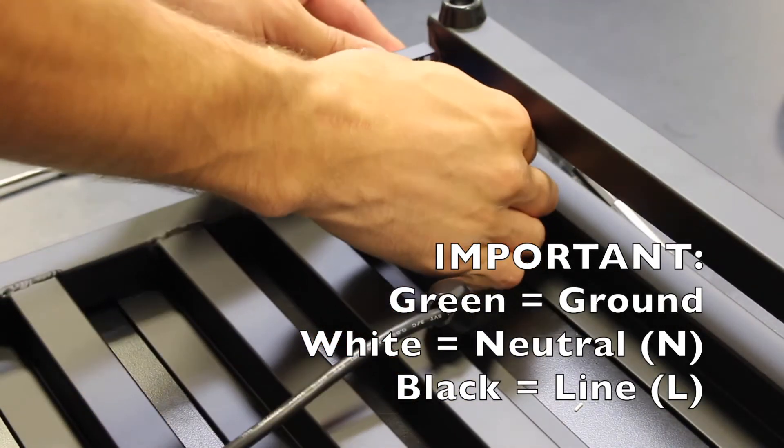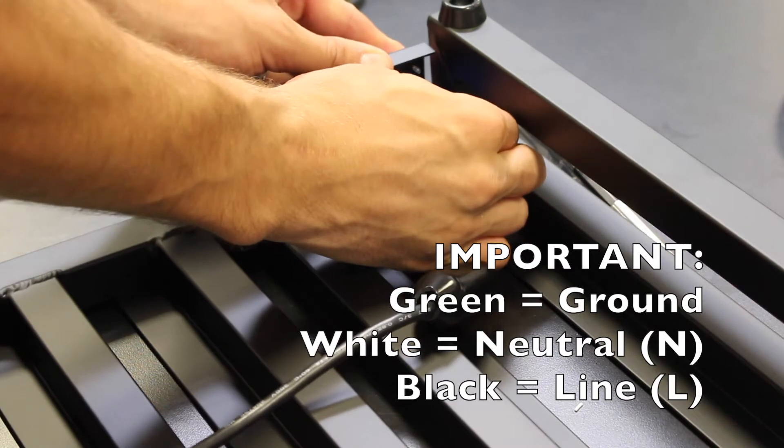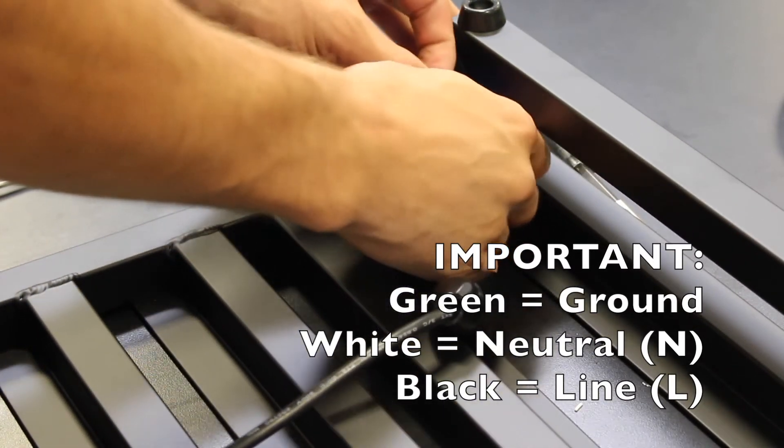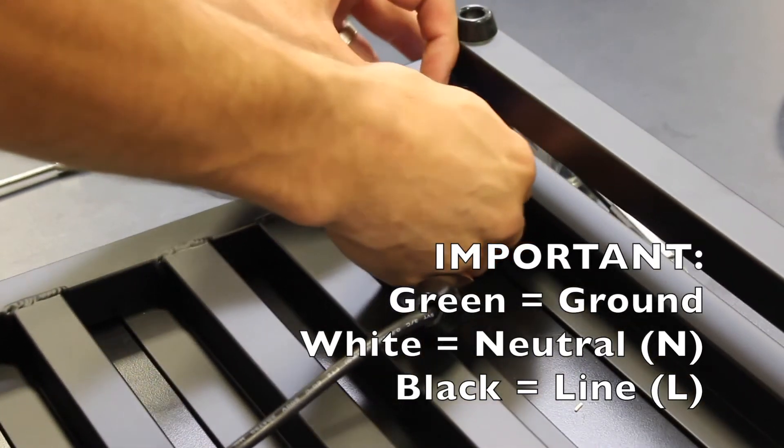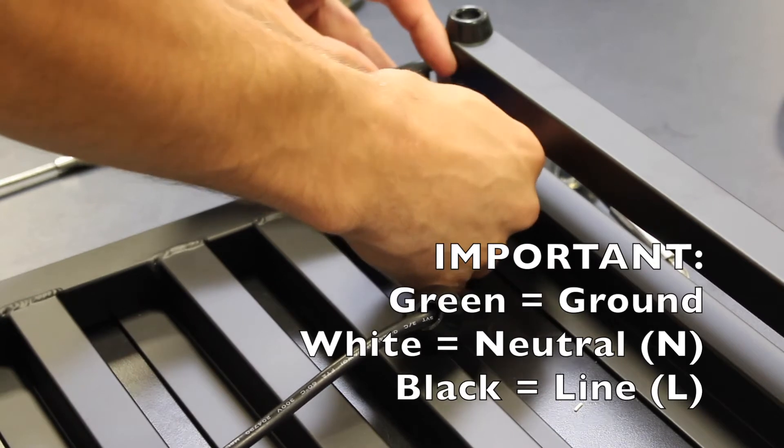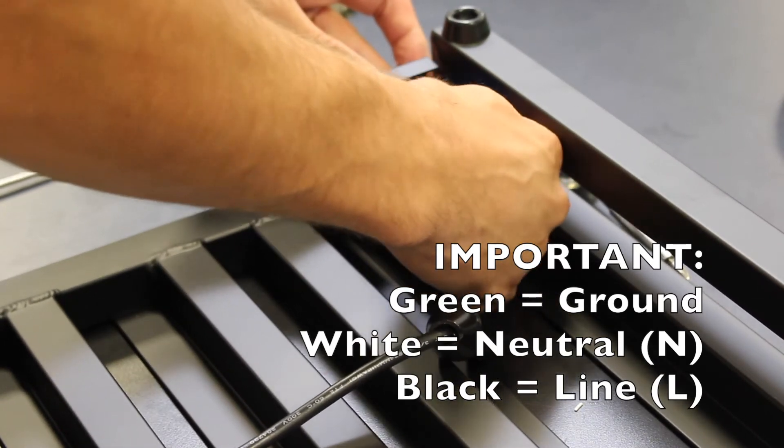The green goes to the center tab of the power con, which is the ground. The white wire goes to the neutral tab of the power con, which is the one marked N. Then the black goes to the line tab of the power con, which is the one marked L.